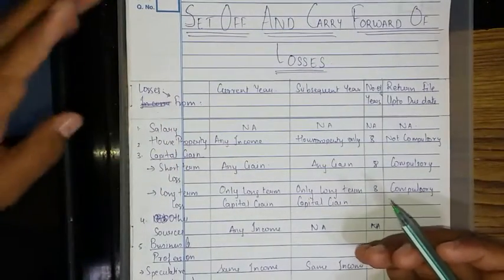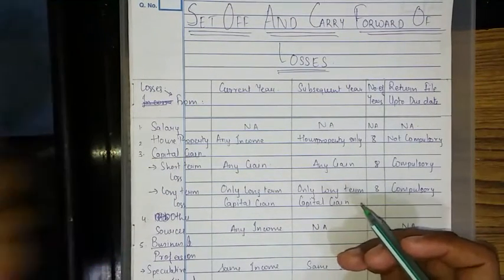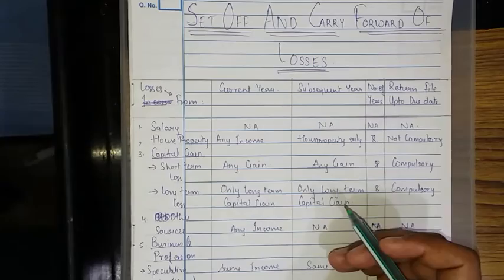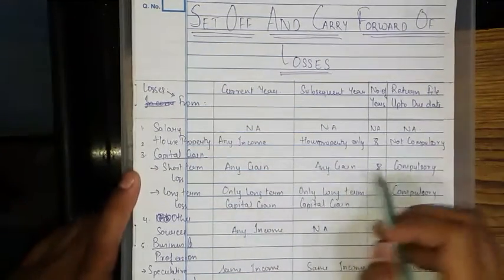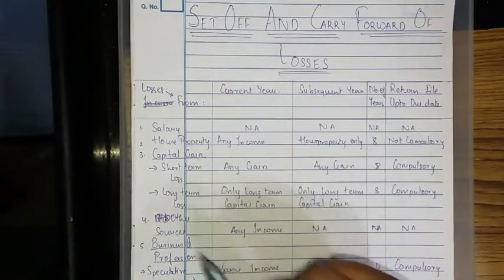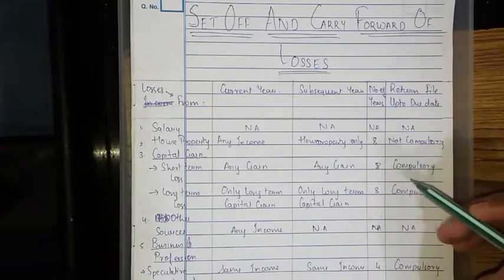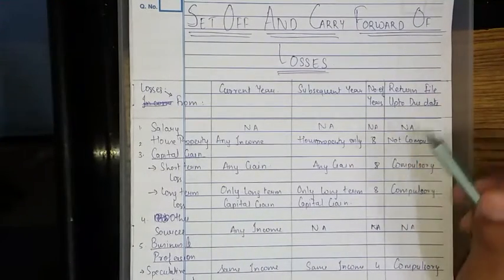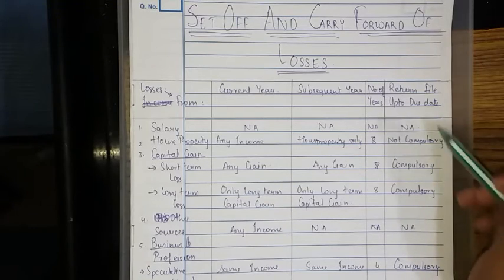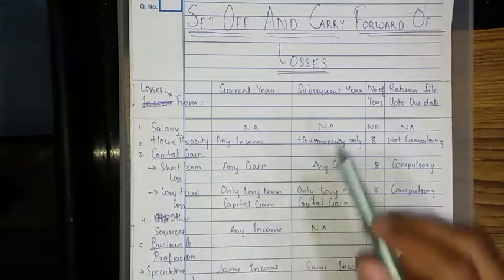Just like a younger brother gets more advantages than the older brother — short-term capital loss is the younger brother and long-term capital gain is the elder brother. The benefit of carrying forward the short-term capital loss is given for 8 years, but return filing up to the due date is compulsory. If the return is not filed by the due date, the carry forward benefit will not be available to the assessee.